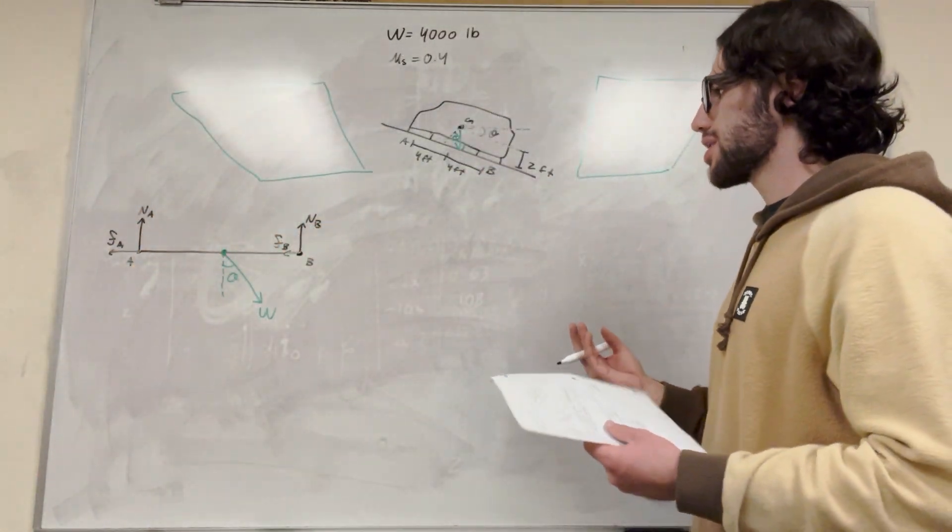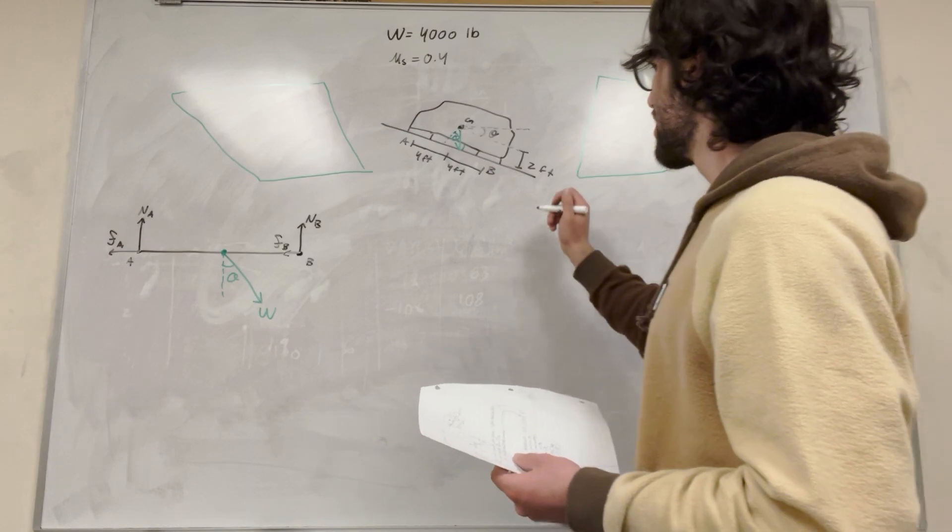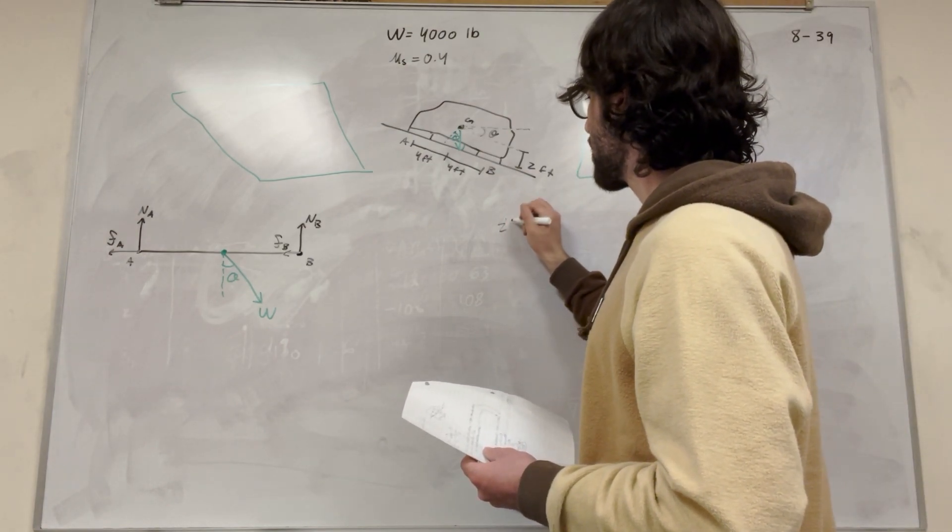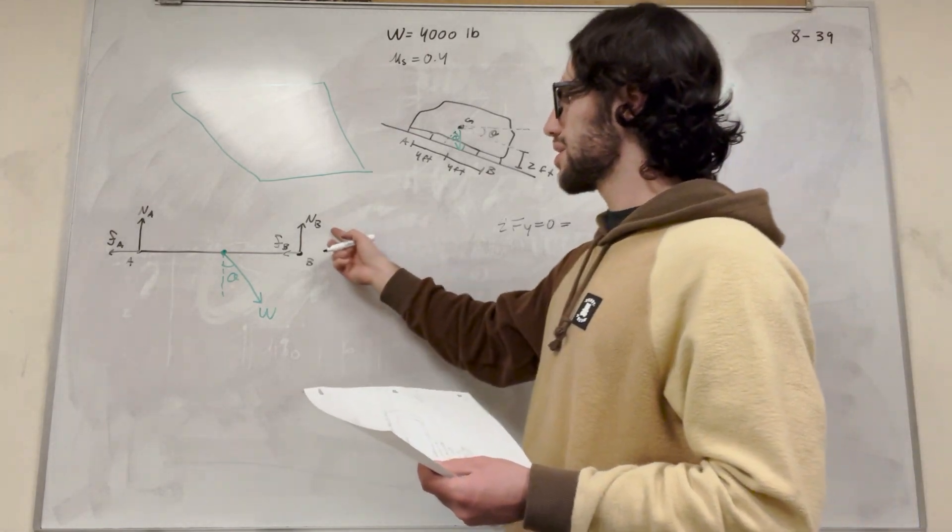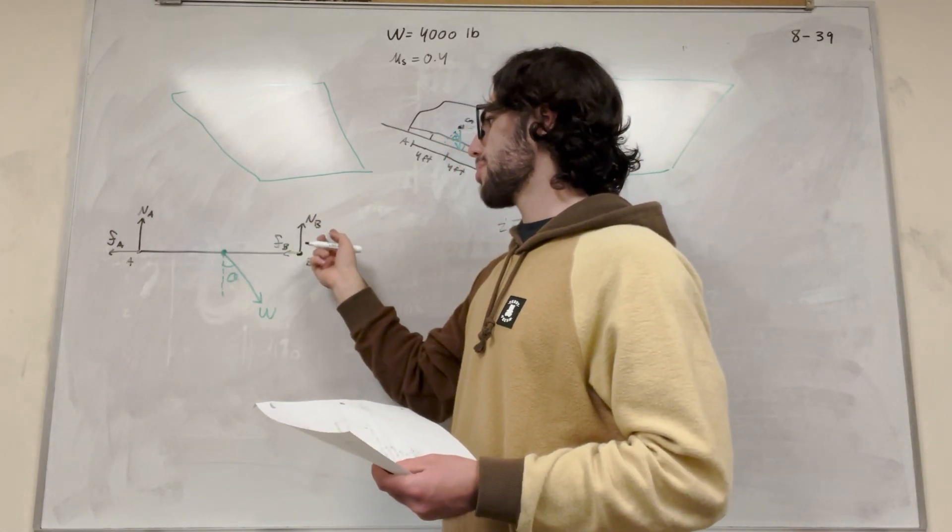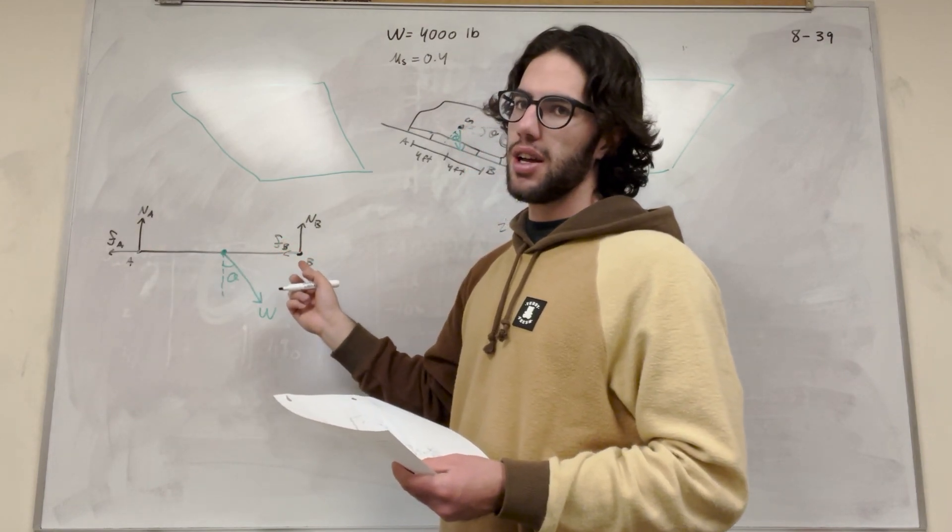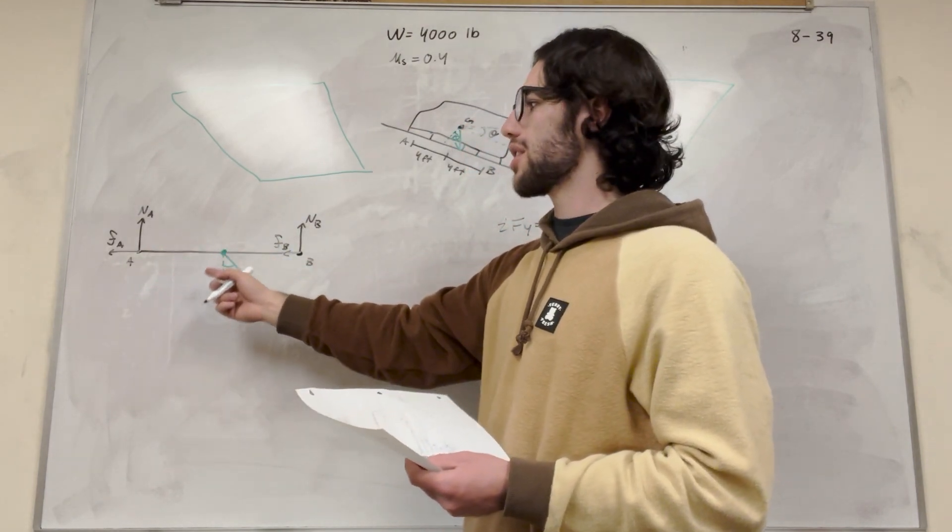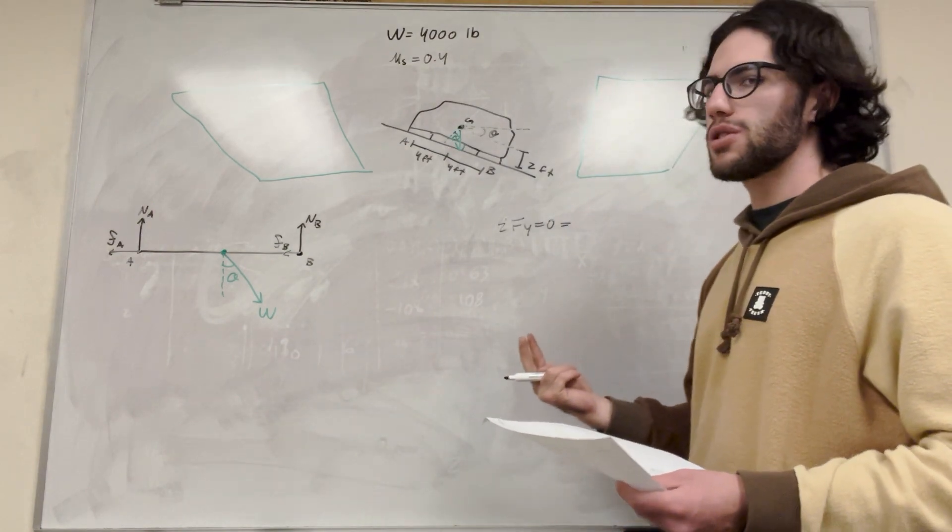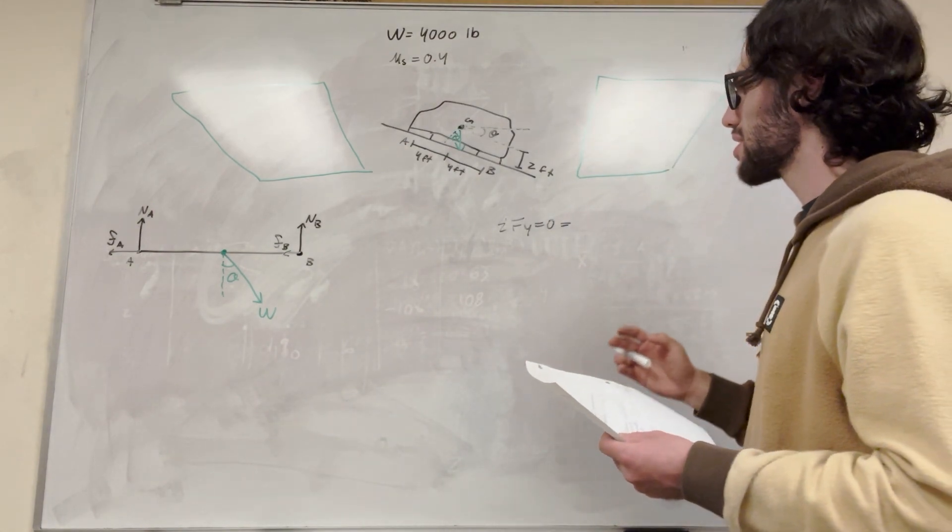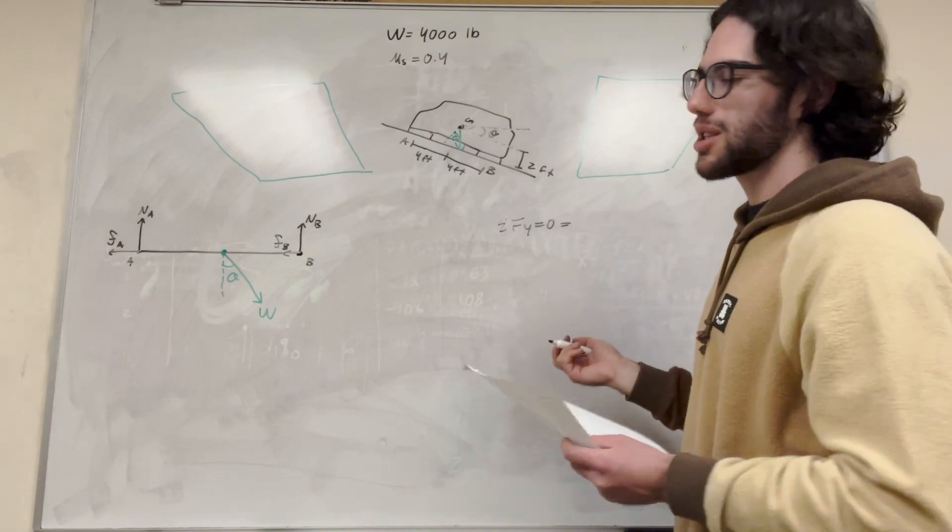So let's start with sum of the forces in the Y direction. So what do we have? We have two unknowns. We have normal A, normal B, and then friction at A, and friction at B. And so these two are dependent upon each other because friction is the coefficient of friction times normal. So we have two unknowns, so we're going to need at least two equations to solve this.